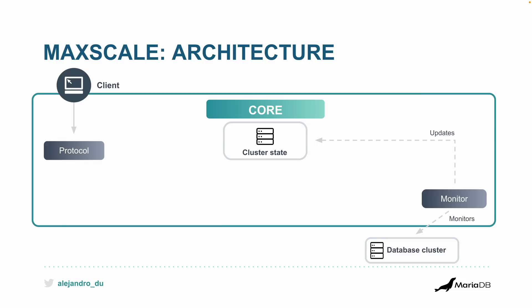When the client needs to connect to the database, it does so through a wire protocol — for example, the MariaDB protocol — with a port number, just like connecting to a regular database. The client totally thinks it's talking to one database and has no idea what's going on behind the scenes. This simplifies the perspective the application has, so the developer doesn't need to worry about the cluster complexity.